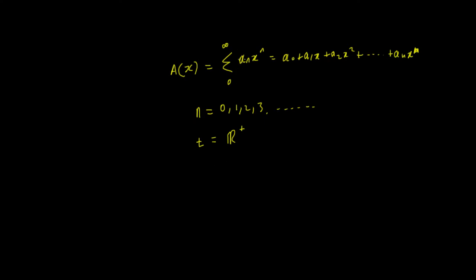Now our a_n is no longer going to be a value a_n, it's going to be a function of t, so we could just call that some function of t which is a(t). Our x^n is going to be x raised to the power of t. The summation, because we're dealing with a continuous variable t, will be an integral from 0 to infinity by dt, and that's going to give us our value a(x).